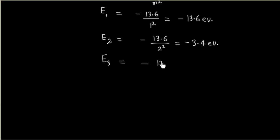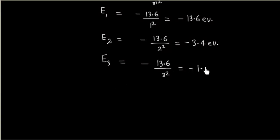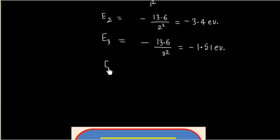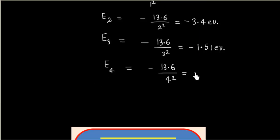For E3, n=3: E3 = -13.6 / 9 ≈ -1.51 eV. For E4, n=4: E4 = -13.6 / 16 ≈ -0.85 eV.